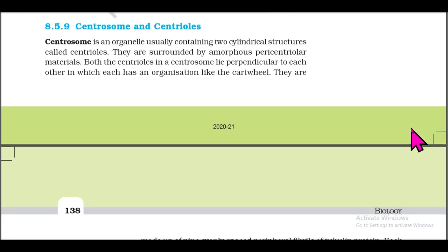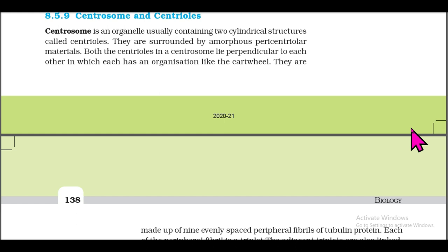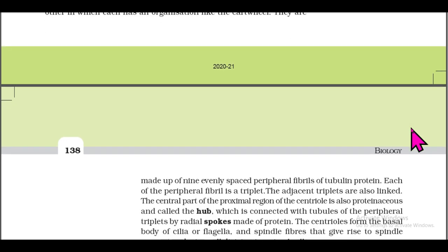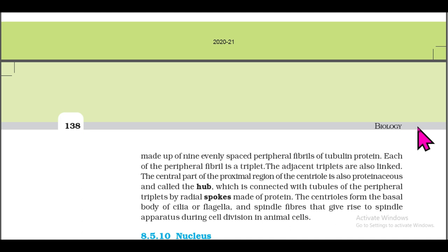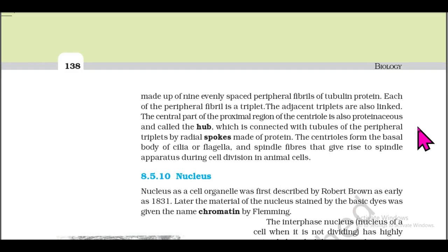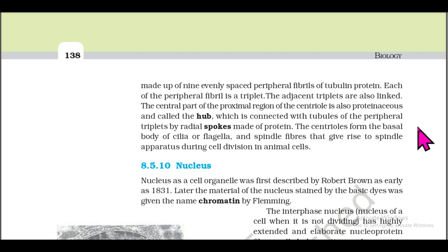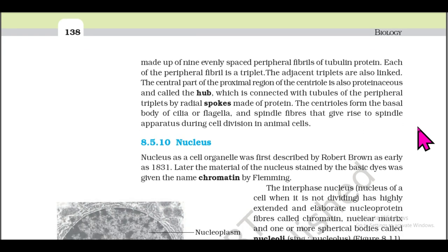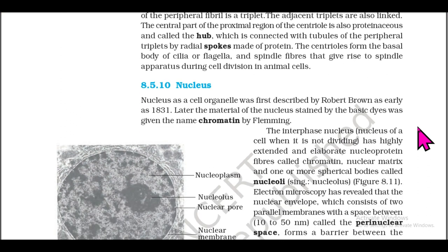Section 8.5.9: Centrosome and Centrioles. A centrosome is an organelle usually containing two cylindrical structures called centrioles, surrounded by amorphous pericentriolar material. Both centrioles in a centrosome lie perpendicular to each other, each having a cartwheel-like organization. They are made up of nine evenly spaced peripheral fibrils of tubulin protein, each peripheral fibril being a triplet; adjacent triplets are also linked. The central part of the proximal region of the centriole is proteinaceous and called the hub, connected with peripheral triplets by radial spokes made of protein. Centrioles form the basal body of cilia or flagella and spindle fibers during cell division.